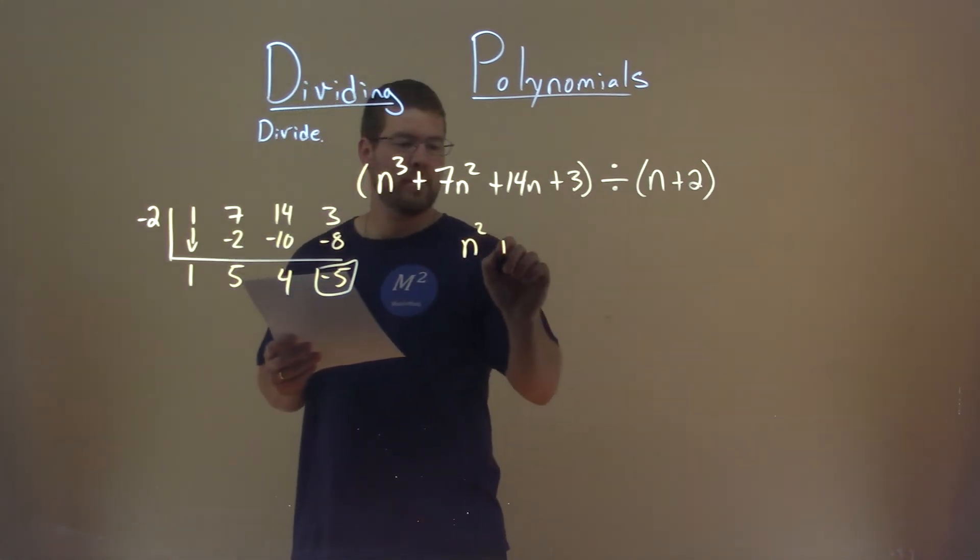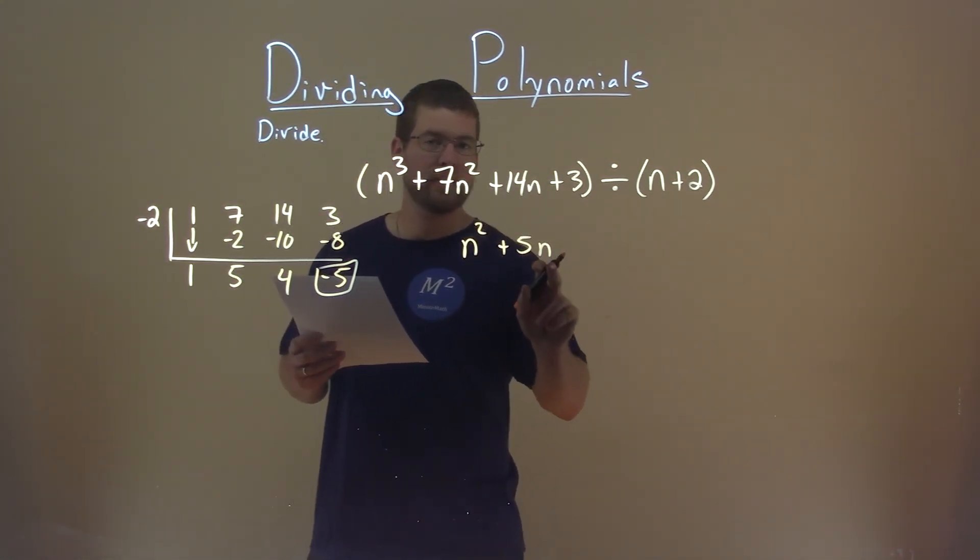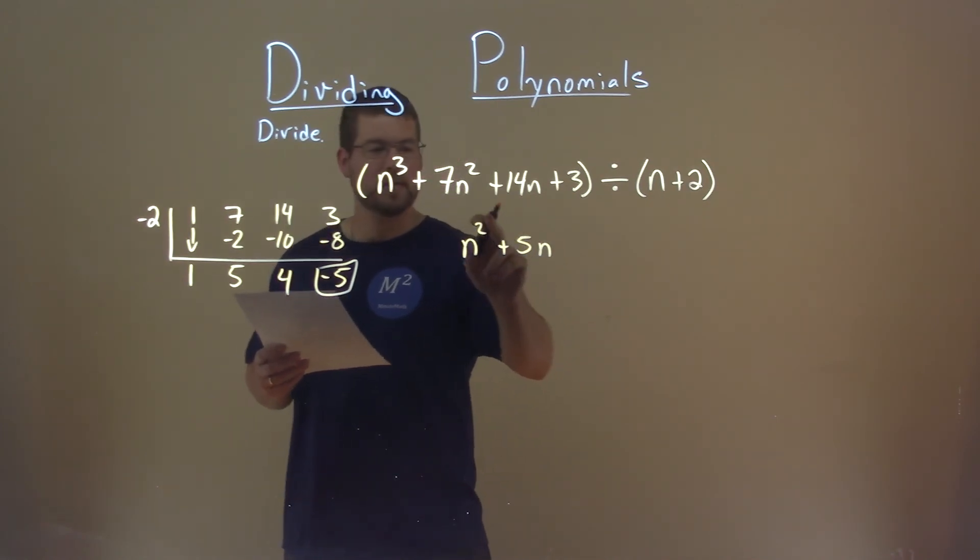Then, we add the next part. Plus a 5, n, going down by exponent values, so squared to the first power.